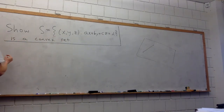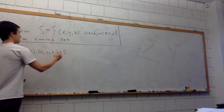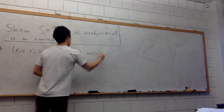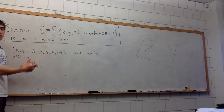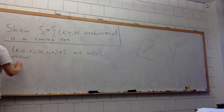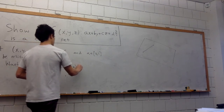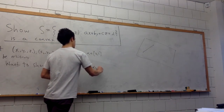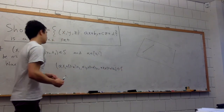To do that, let's take two arbitrary points in the plane. Let (x1, y1, z1) and (x2, y2, z2) be in my set S, and let alpha be a number between 0 and 1. What we want to show is that the convex combination of these two points is also in S. Since these two points and alpha are arbitrary, this will show the set is convex. So we want to show that (alpha*x1 + (1-alpha)*x2, alpha*y1 + (1-alpha)*y2, alpha*z1 + (1-alpha)*z2) is also in S.